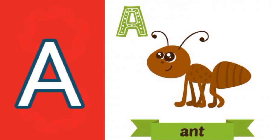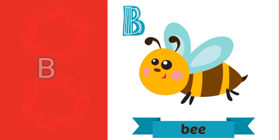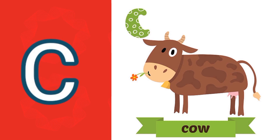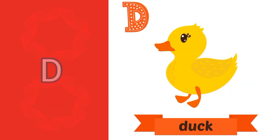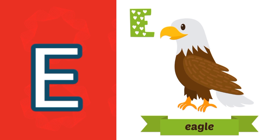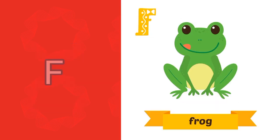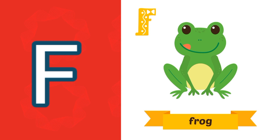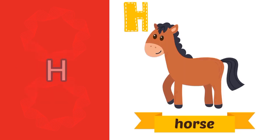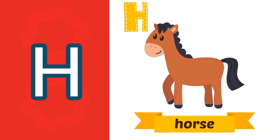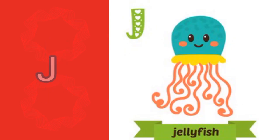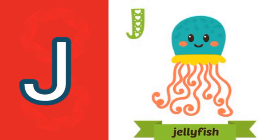A sound, A — ant. B sound, B — bee. C sound, K — cow. D sound, D — dog. E sound, A — eagle. F sound, F — frog. G sound, G — goat. H sound, H — horse. I sound, A — iguana. J sound, J — jellyfish.